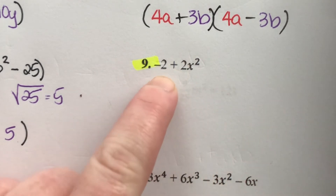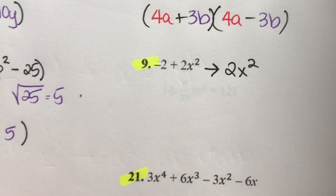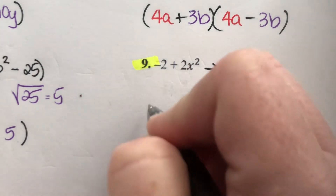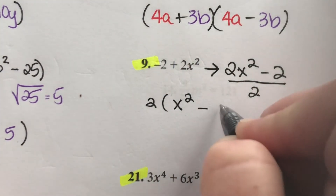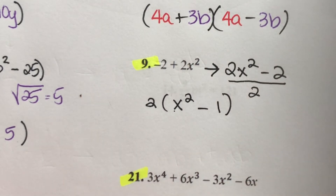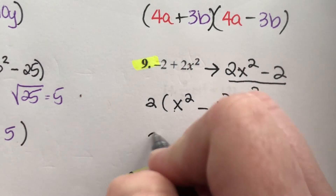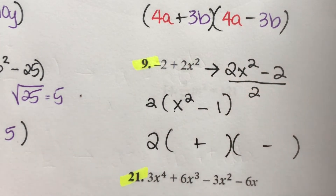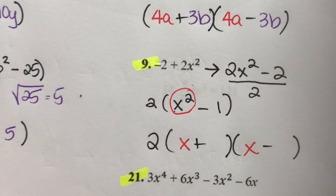For -2 + 2x², first flip the order: 2x² - 2. They're still not perfect squares, so factor out 2: we get 2(x² - 1). Are those perfect squares? Yes — square root of x² is x, square root of 1 is 1. So the answer is 2(x+1)(x-1).